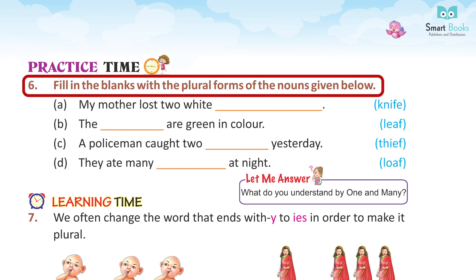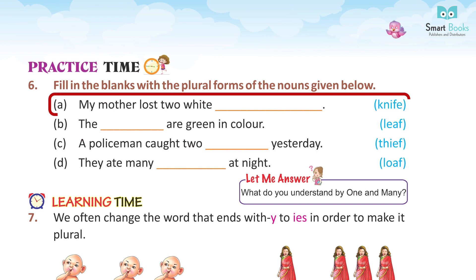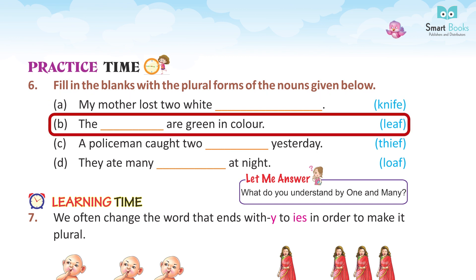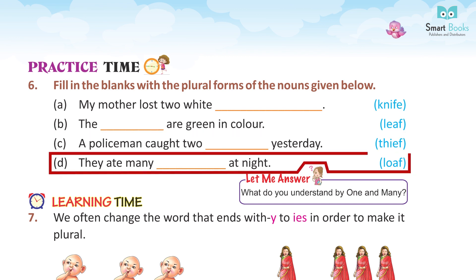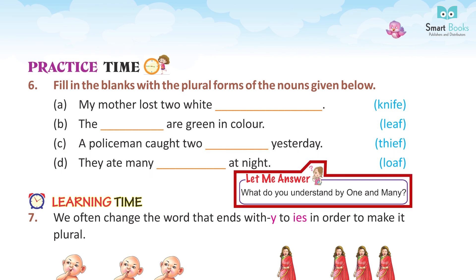Fill in the blanks with the plural form of the nouns given below. A. My mother lost two white — knives. B. The dashes are green in color — leaves. C. A policeman caught two dashes yesterday — thieves. D. They ate many dashes at night — loaves.